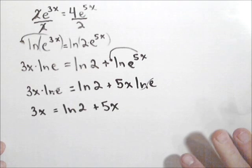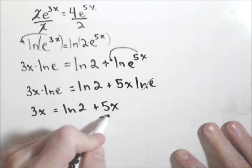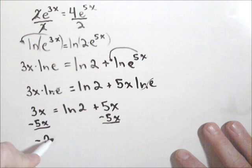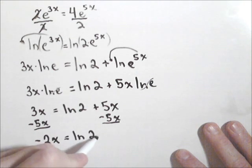And we need to solve this for x. So we're going to subtract 5x off of both sides. It's not the only way to do it, but they can cancel out. We get negative 2x equals ln of 2.